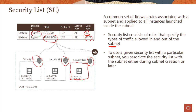To use a security list with a particular subnet, you associate the security list with the subnet either during the creation process or later — we saw this again in several demos. When we were creating a subnet, we could attach our security list if you already had one, or use the default one, and you could always change that later on as well.